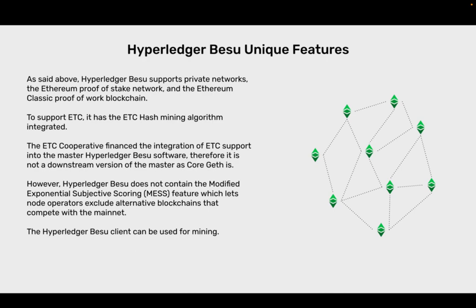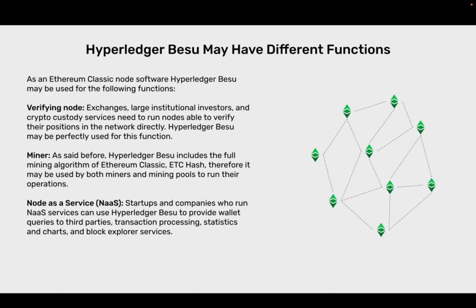The Hyperledger Bezu client can be used for mining. Hyperledger Bezu may have different functions. As an Ethereum Classic node software, it can run nodes able to verify their positions in the network directly. As a miner, Hyperledger Bezu includes the full mining algorithm of Ethereum Classic ETCHash; therefore, it may be used by both miners and mining pools to run their operations. For node as a service (NaaS), startups and companies who run NaaS services can use Hyperledger Bezu to provide wallet queries to third parties, transaction processing, statistics and charts, and block explorer services.